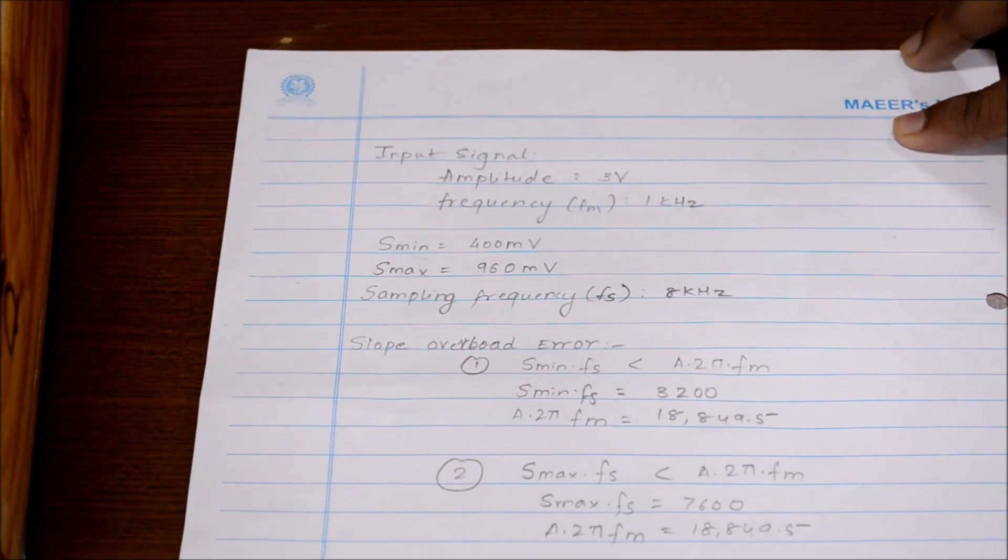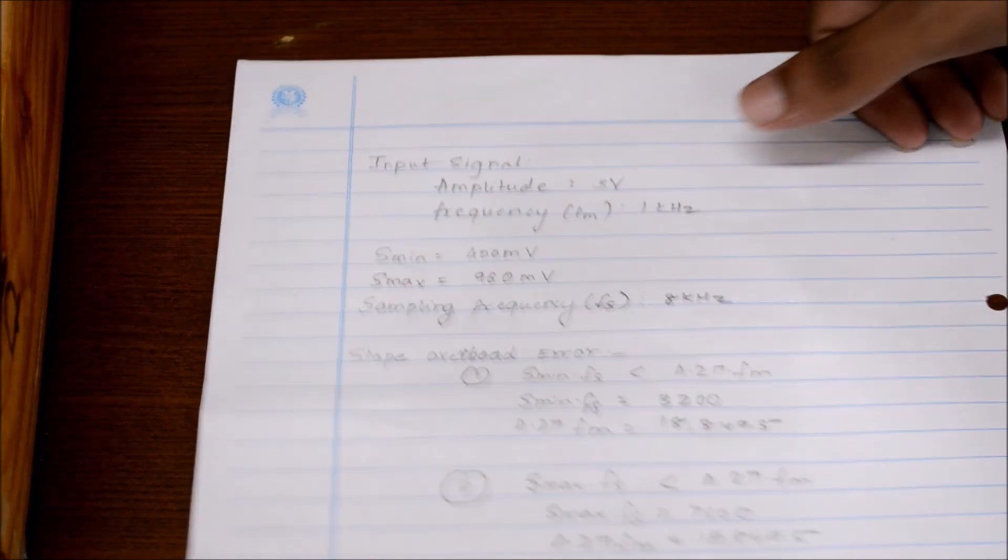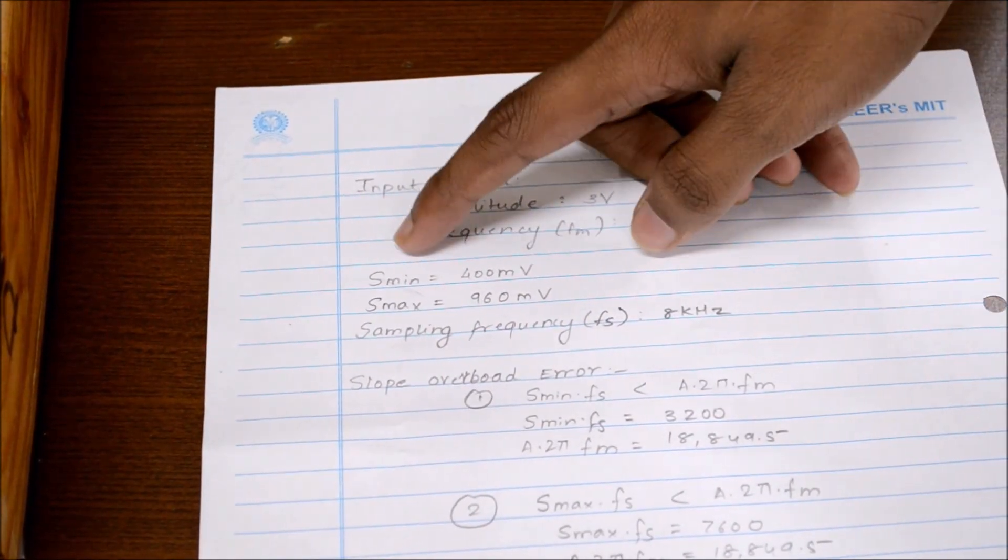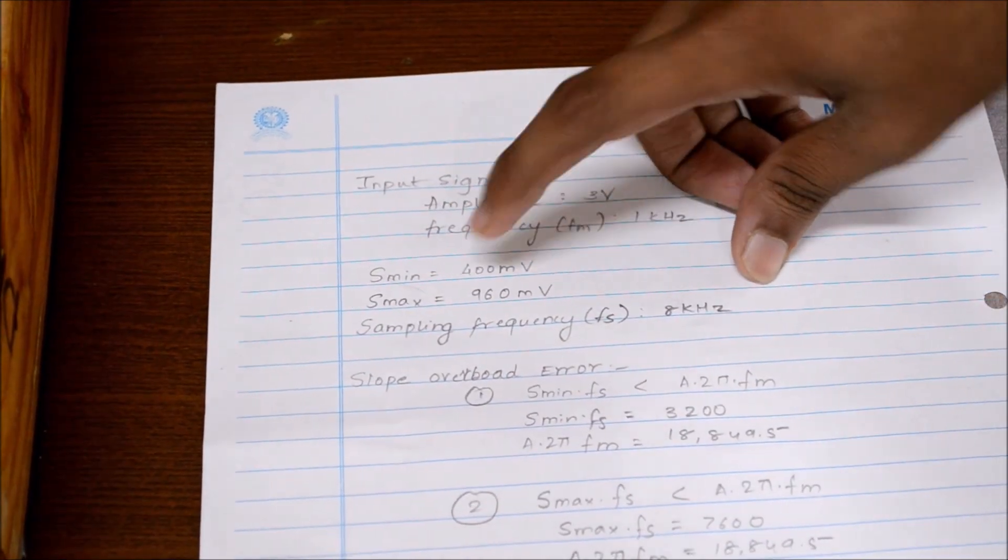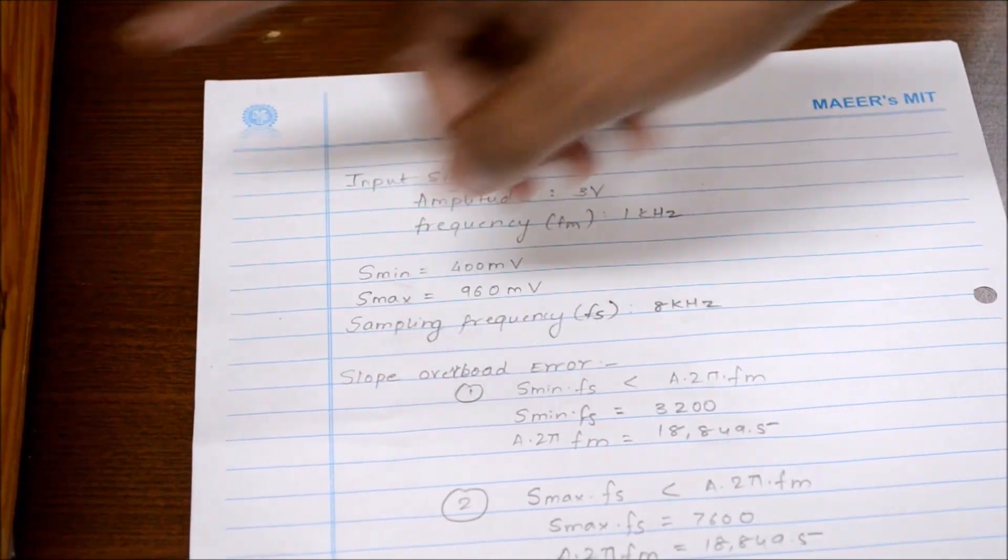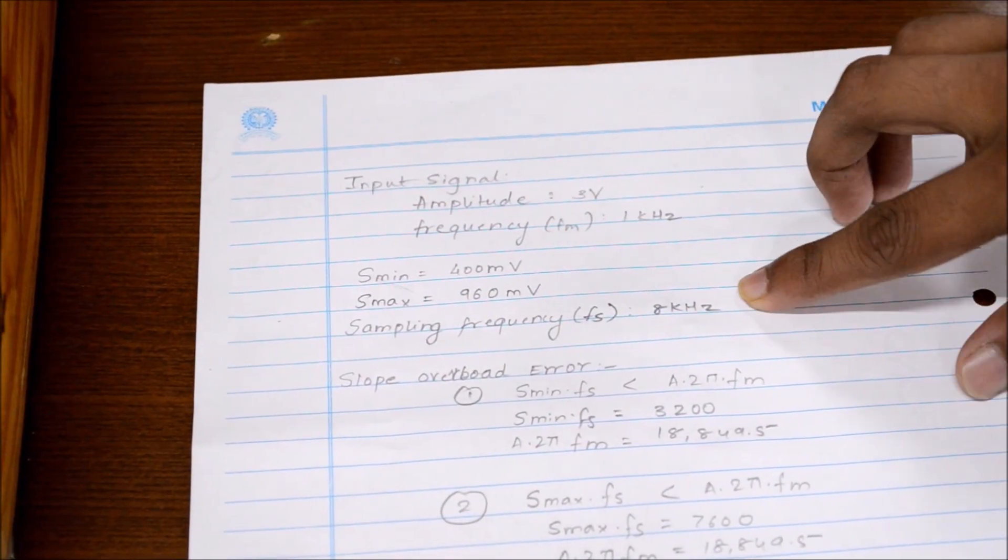As we have observed the signals on the CRO and we took notes of the input signal amplitude, its frequency, we also saw the step size, which is minimum step size of 400mV and maximum of 960mV. The sampling frequency for the Castronica kit mentioned here is 8kHz.